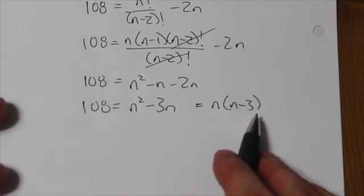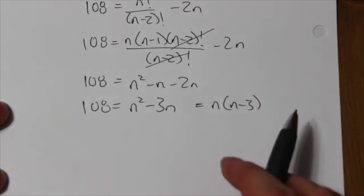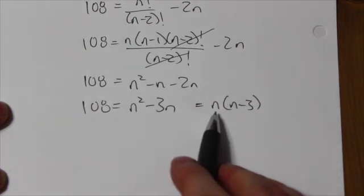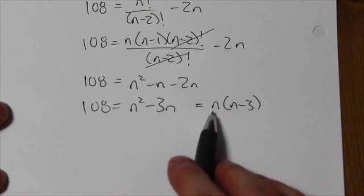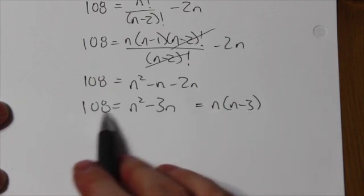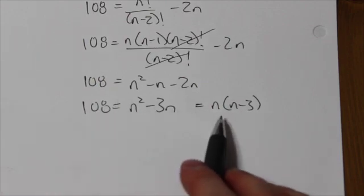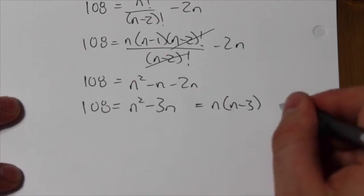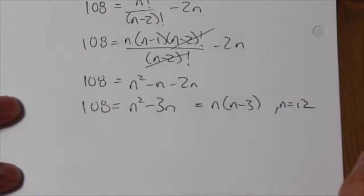So a number multiplied by 3 less than itself is equal to 108. Well, if you're comfortable with the factors and the multiples, up to multiples of 12, you'd notice that 12 times 9 is equal to 108. So I can see that the answer right now is going to be 12.